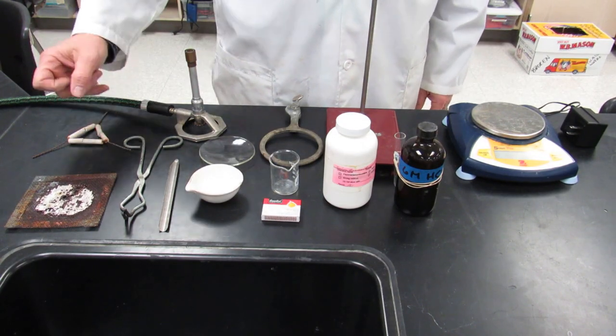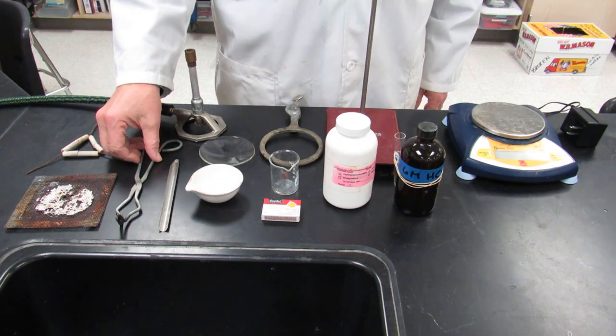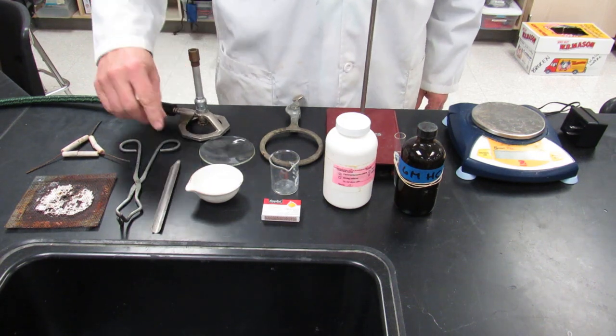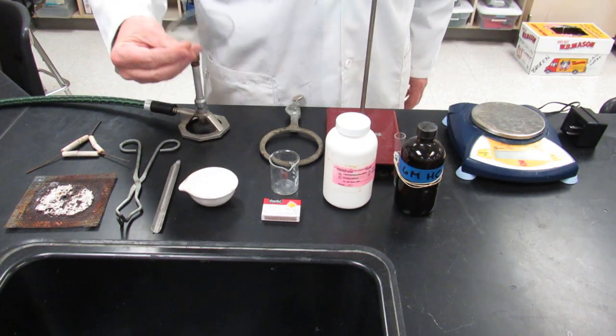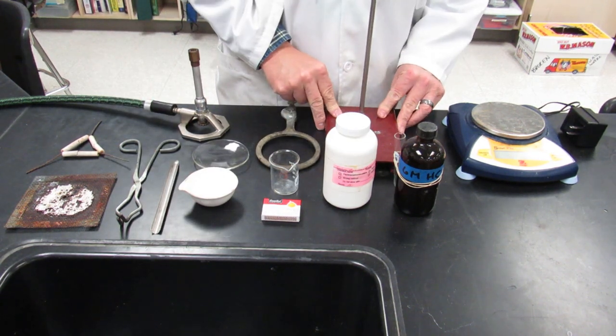First thing we're going to look at is what we need: wire gauze, clay triangles, crucible tongs, spatula, Bunsen burner, evaporating dish, watch glass, iron ring, and ring stand.